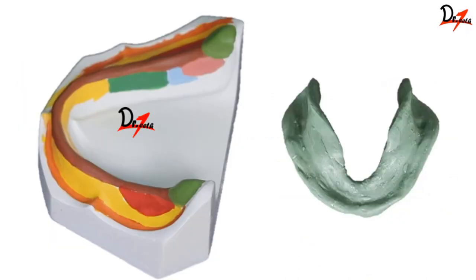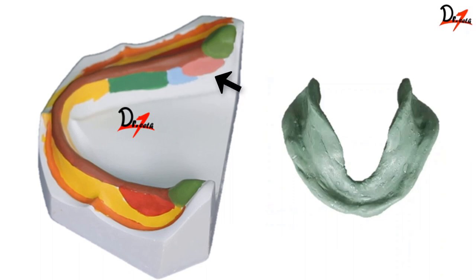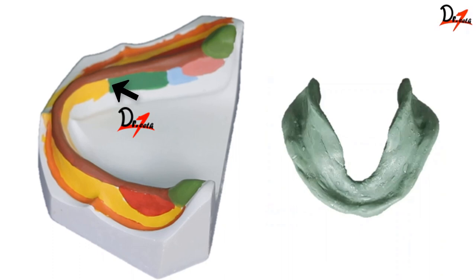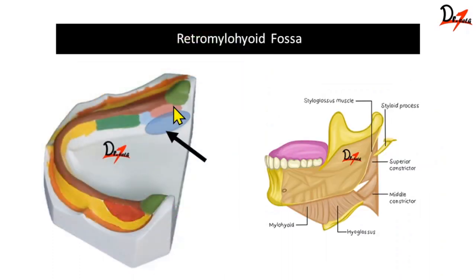The anterior part extends from the lingual frenum till the pre-mylohyoid fossa. The middle portion extends from the pre-mylohyoid fossa till the distal part of the mylohyoid ridge. The posterior part extends from the mylohyoid ridge till the retromylohyoid fossa — the posterior part is also known as the lateral throat form. This lateral throat form is produced as an S-shaped curve in the denture and is very important, produced by the influence of various extrinsic and intrinsic muscles of the tongue. During impression making, the patient is asked to do various tongue movements so that the alveolingual sulcus can be recorded.